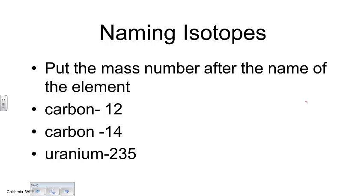There's a way we can name isotopes: you simply name the element and then put the mass number of that particular isotope after the name. Carbon has a couple of common isotopes — one is carbon-12, which is very common, and another is carbon-14. There are also various isotopes of uranium, and one important for nuclear power reactors is uranium-235. You just say the element name and then the mass number after it.